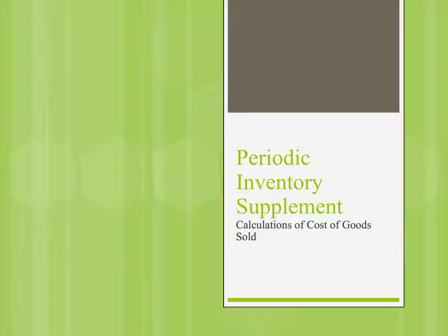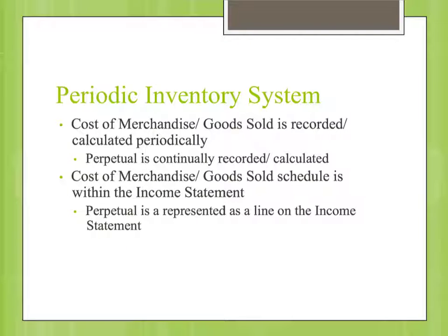In this video, we're going to look at the periodic inventory system and how we do the calculations for cost of goods sold. In a periodic inventory system, cost of goods sold is recorded and calculated periodically, at the end of the accounting cycle. As you recall, in the perpetual system, it's continually recorded and calculated.